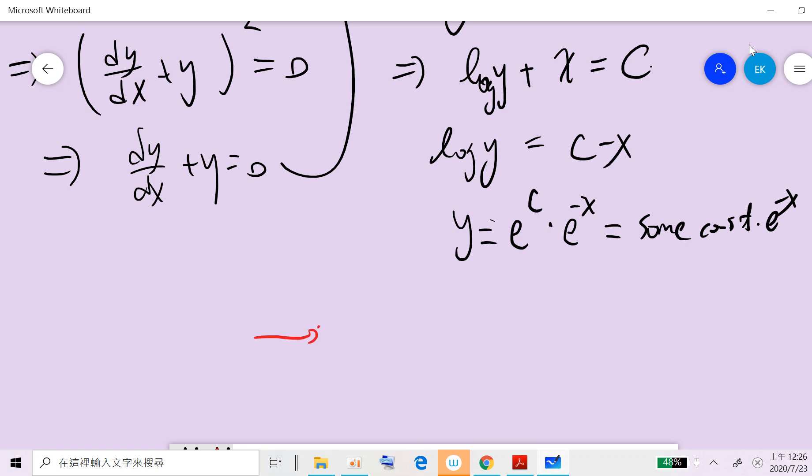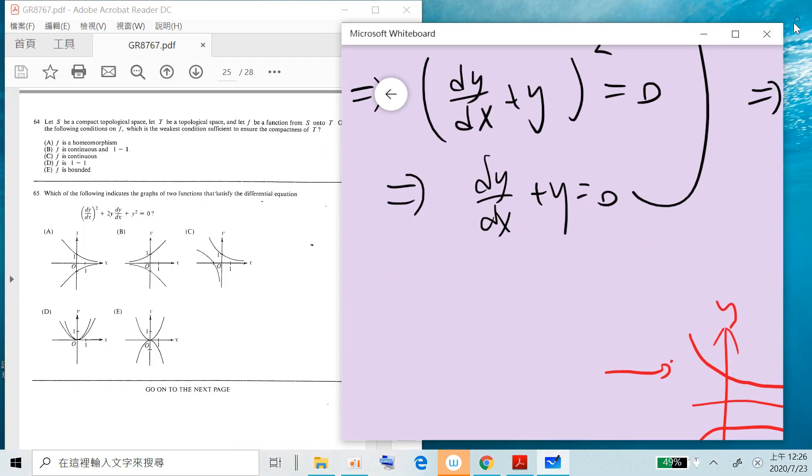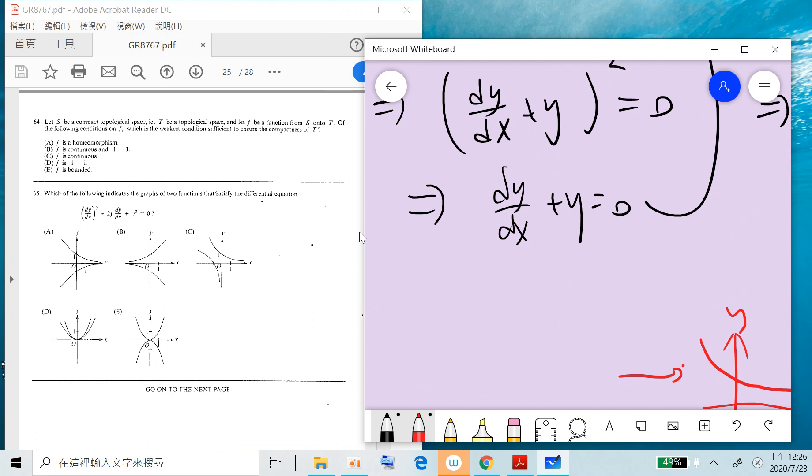This tells you that y can be e^(-x) times some positive constant, or e^(-x) times some negative constant. So the answer should be A. Answer is A, that's it.